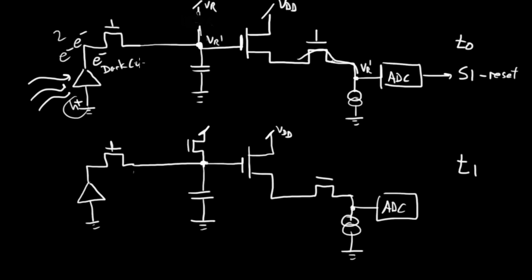But also there are other charges piling up, dark current. So let's say we had one electron of dark current. Dark current. Dark current. So these are photo charges, and those are dark current. And I intentionally drew three charges, three electrons, so you can see how they flow through the system.